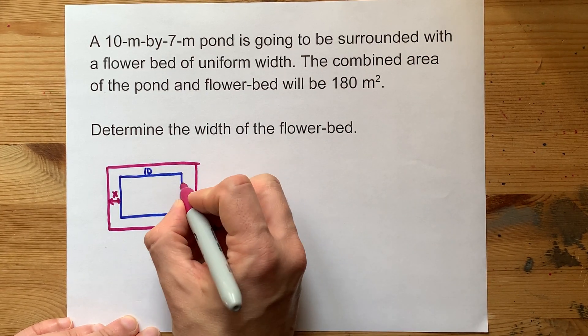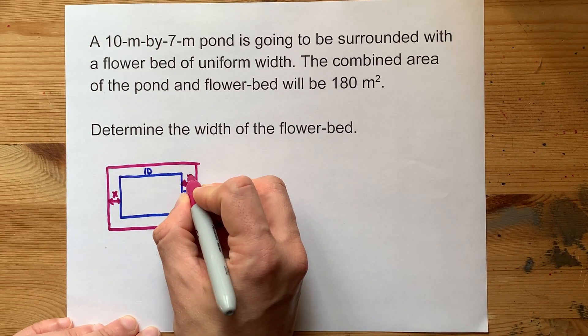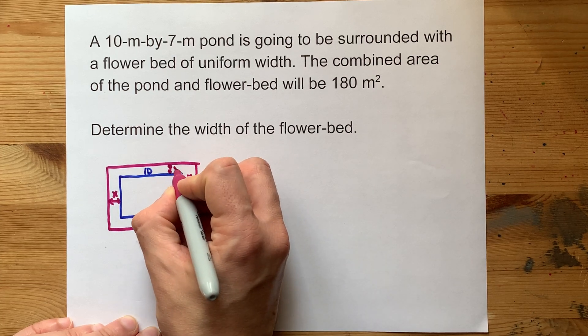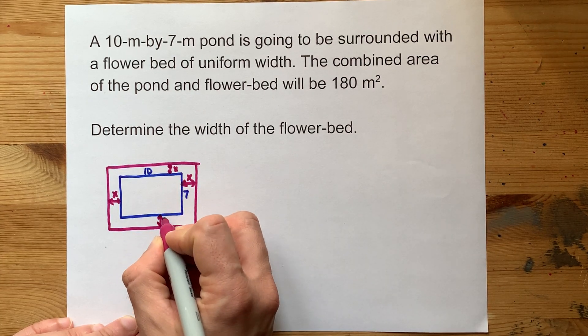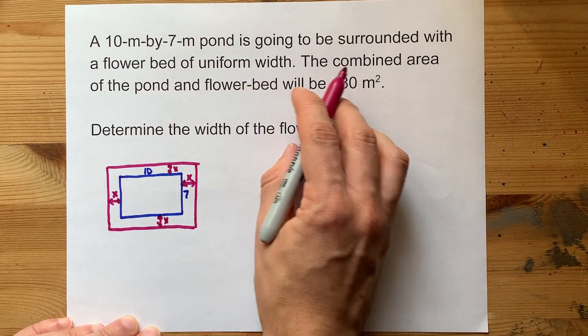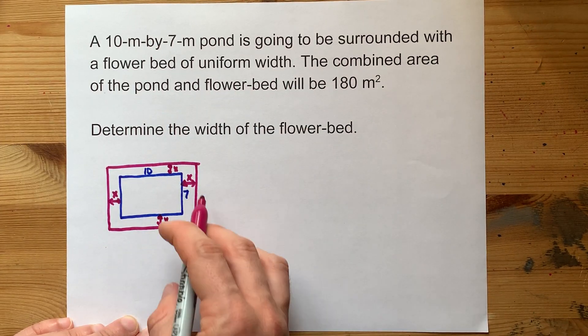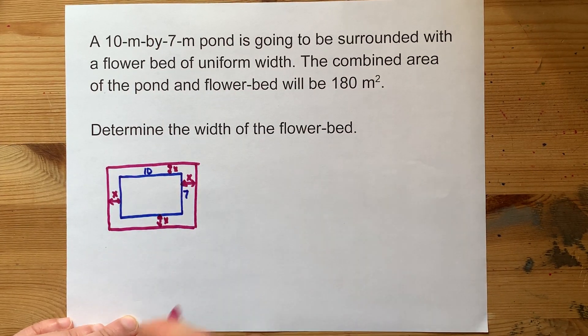W would work as well. And then this length is X, and then this length is X, and this length is X. Uniform width means it's the same width all the way around, X for me.